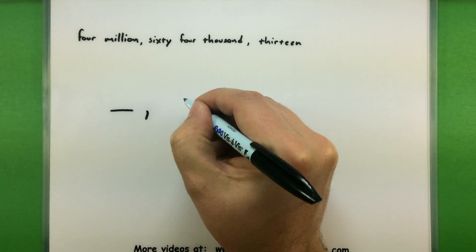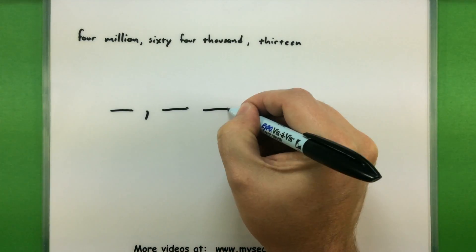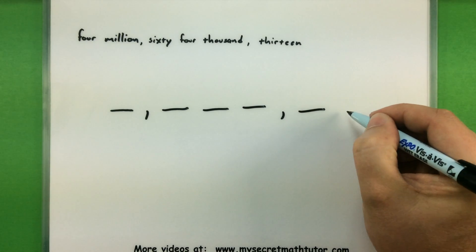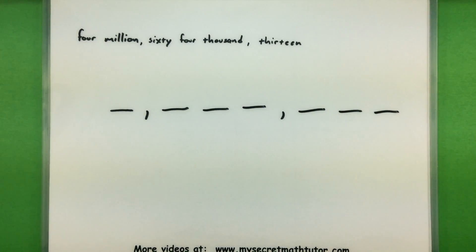So I have something for the millions, hundred thousands, ten thousands, thousands, hundreds, tens, and ones. Okay, so I've got a place for everything starting with the largest one going all the way down to ones. Let's see what we need to put in those.